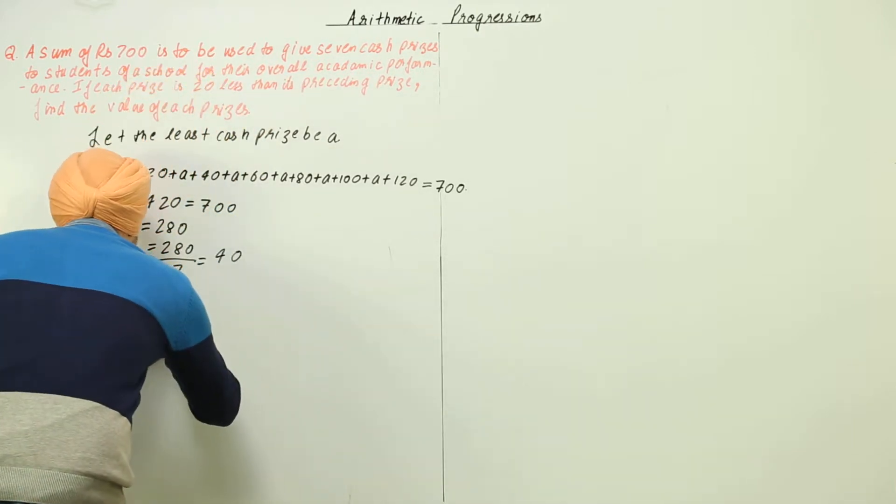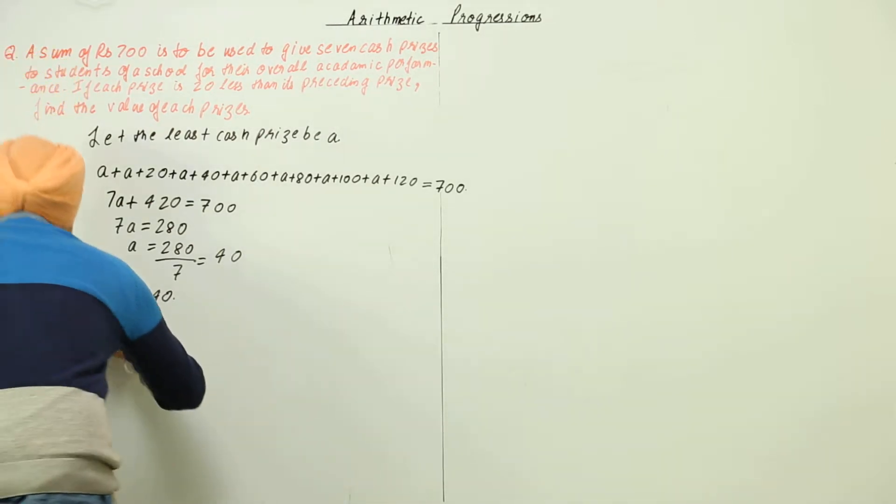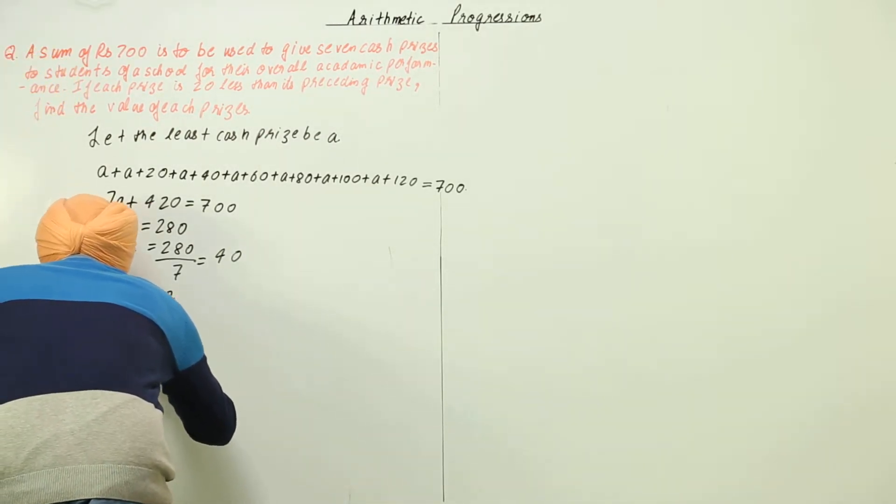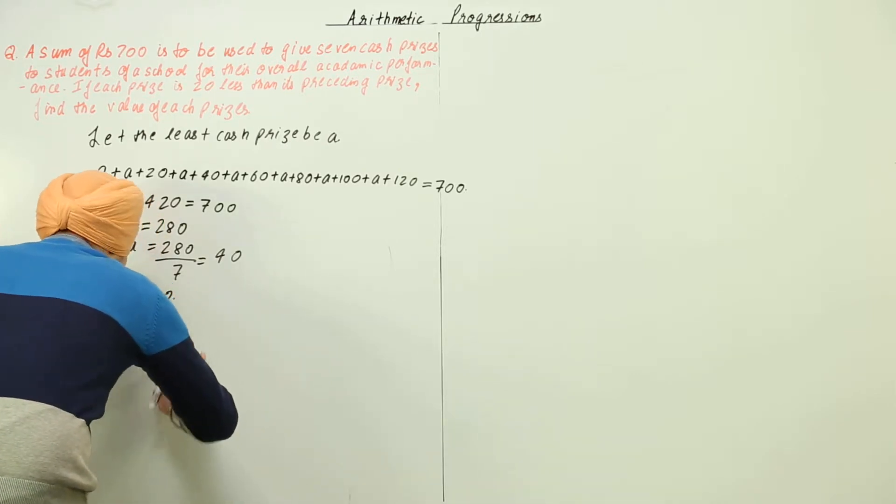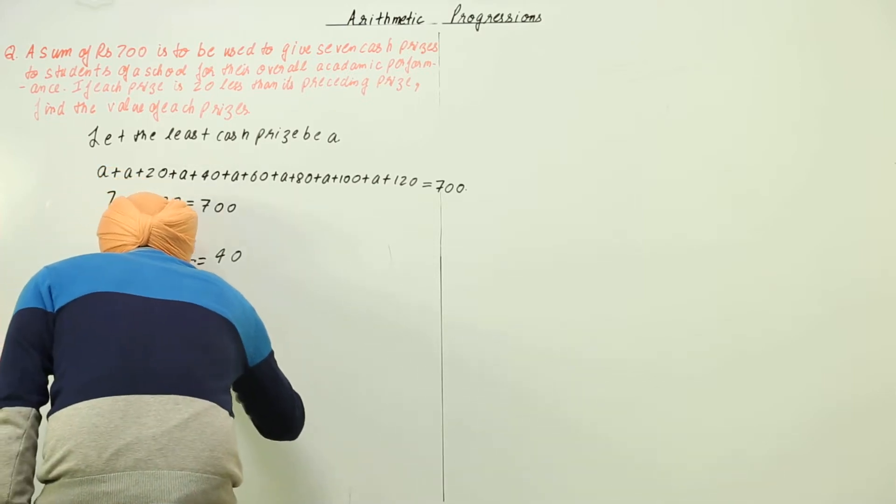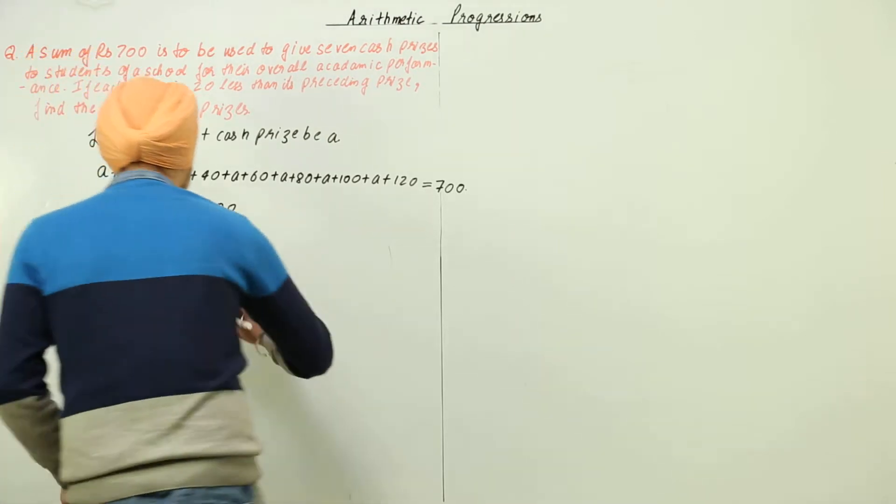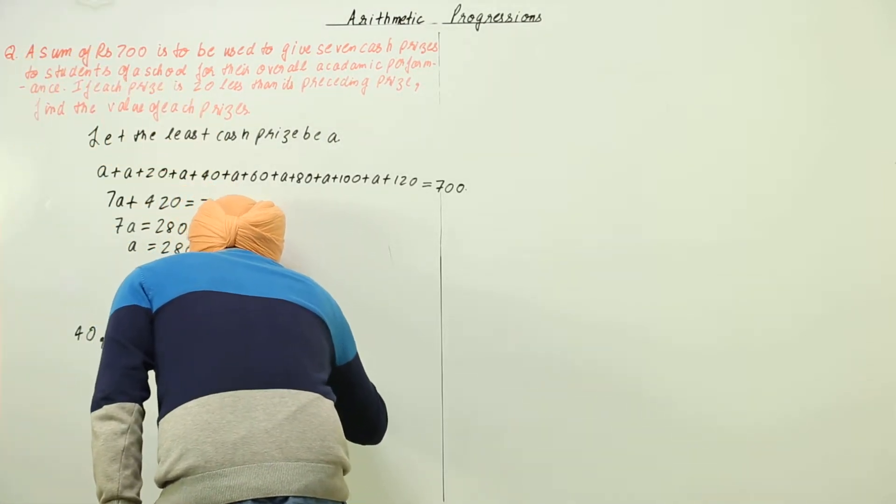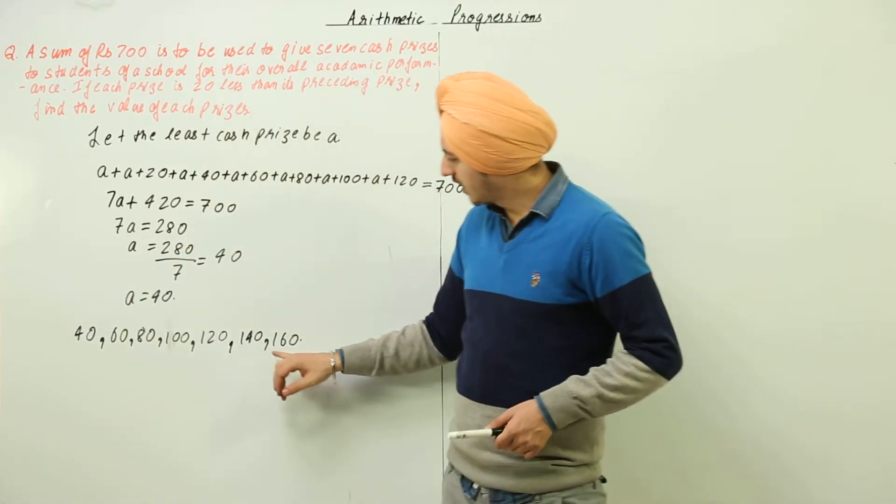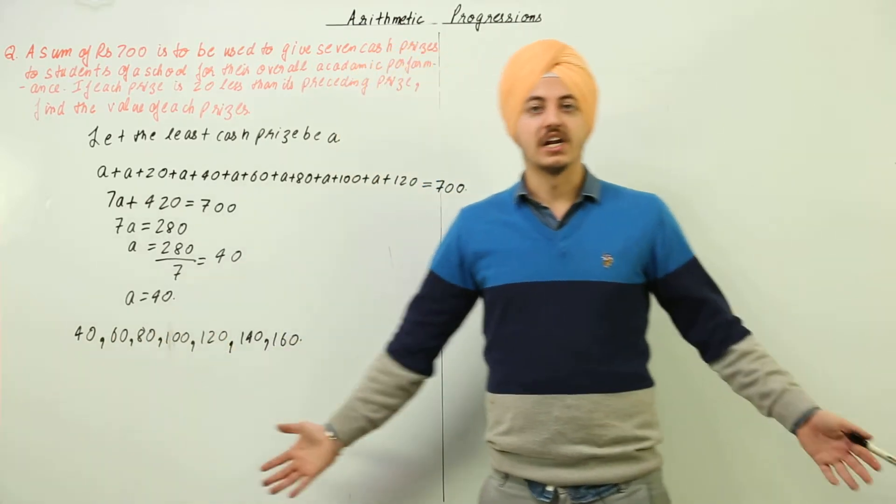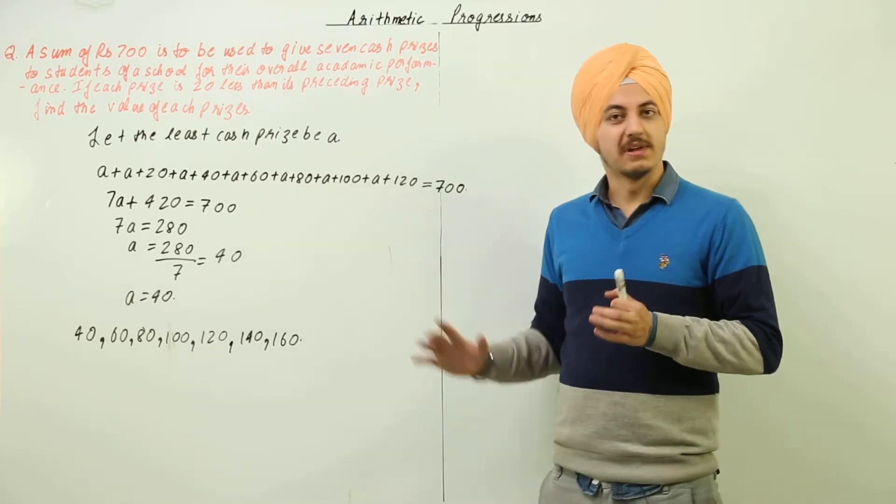So if a here is equal to 40, so the cash prices would be as follows: 40, 60, 80, after 80 there would be 100, then 120, 140 and 160. Now these cash prices are 1, 2, 3, 4, 5, 6, 7, that is it. This is the solution to the question if you understand and go with this method.